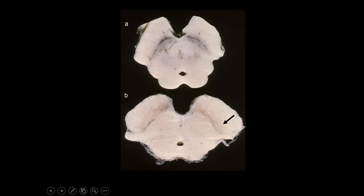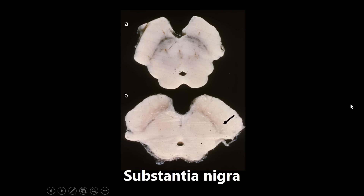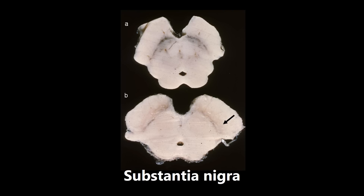This next one is definitely something you should know — it's very high yield. This is an image of the basal ganglia, and the arrow is pointing specifically at the substantia nigra. This is important because of Parkinson's disease. In Parkinson's disease, you see a depigmentation of the substantia nigra pars compacta. In image A it's a little bit darker on both sides; in B, not very dark at all. So they may ask you what structure this is or what disease is associated with this depigmentation.